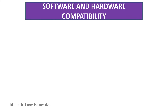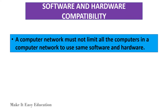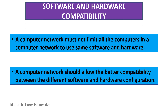Software and hardware compatibility: A computer network must not limit all the computers in a network to use the same software and hardware. A computer network should allow better compatibility between different software and hardware configurations.